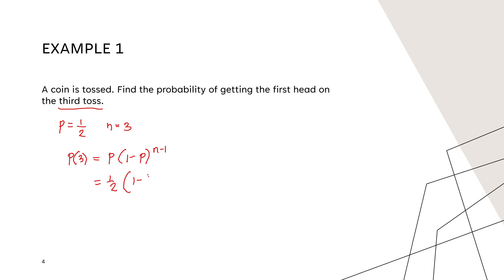So this becomes one half times one half raised to two, which equals one half times one fourth. Therefore the probability that you will get the first head on the third toss is one over eight.